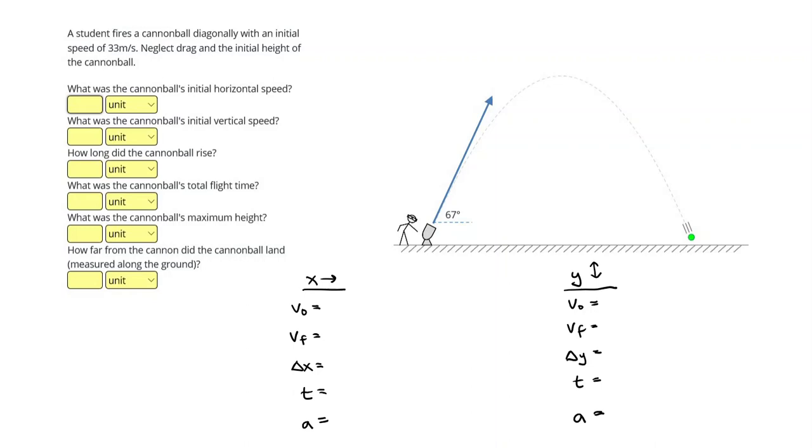A student fires a cannonball diagonally with an initial speed of 33 meters per second. Neglect drag and the initial height of the cannonball. We're also given this angle of 67 degrees.